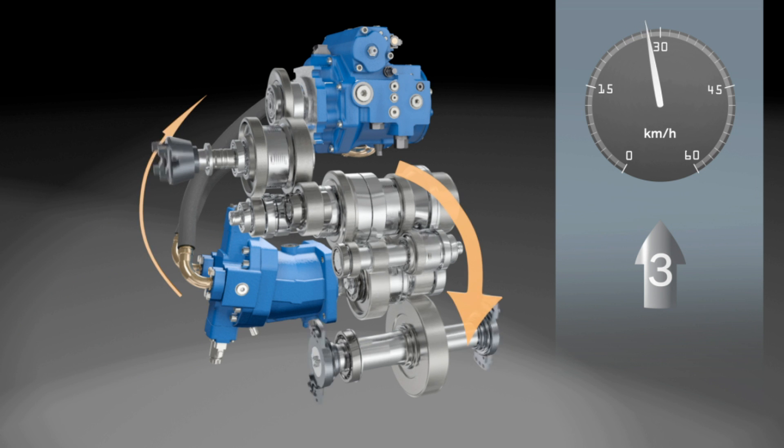The hydrostatic percentage is continuously reduced via the control. Upon reaching the maximum speed, the power transfer takes place solely via the mechanical branch of the HVT, ensuring optimal efficiency.